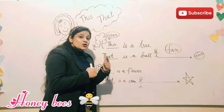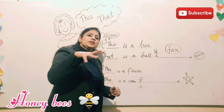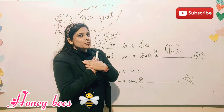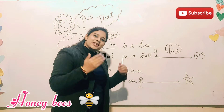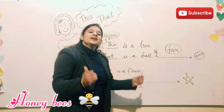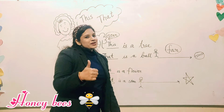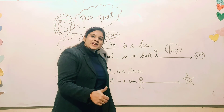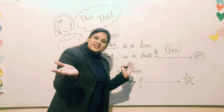Very good. So do comment to tell me that you have understood this topic. Whatever things are near you at home, we say 'this' for them. And for one thing that is far, we say 'that'. So do practice those sentences at home. Thank you so much for watching. In the next video I will come up with these. So keep watching, do subscribe to my channel, comment and share. Thank you.